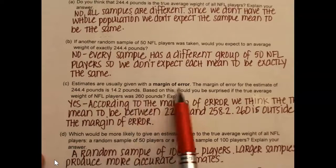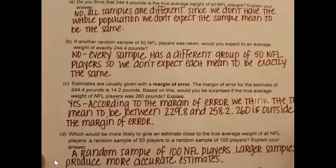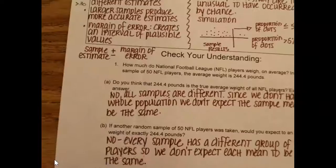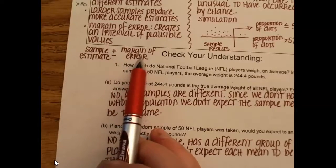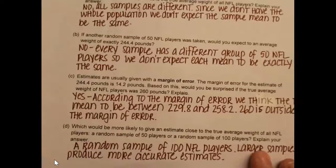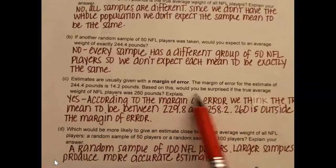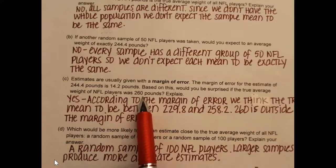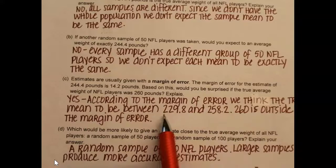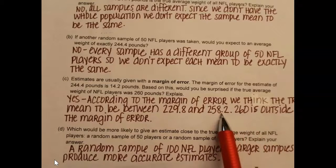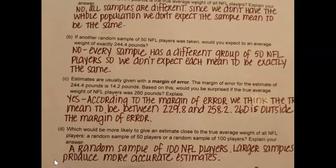Now estimates are usually given with a margin of error. The margin of error for an estimate of 244 pounds is 14.2 pounds. So remember what I was saying up here, you take your sample estimate and add or subtract the margin of error. Would you be surprised if the true average weight was 260 pounds? Yes, because with that margin of error, we would expect the true average to be between 229.8 and 258.2. 260 is outside that range, so that would be surprising if we had that happen.